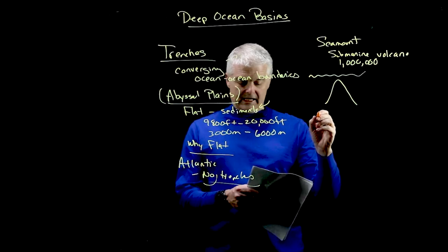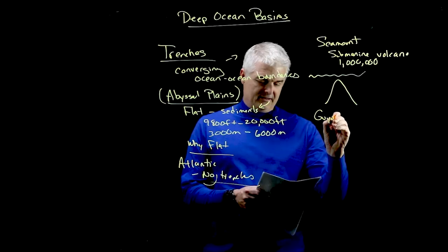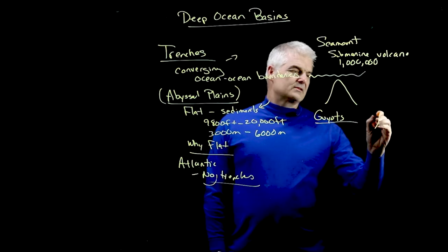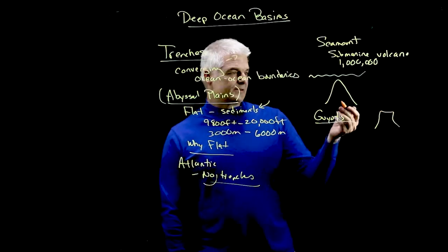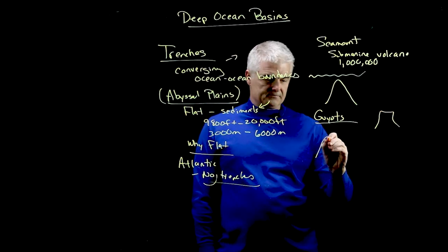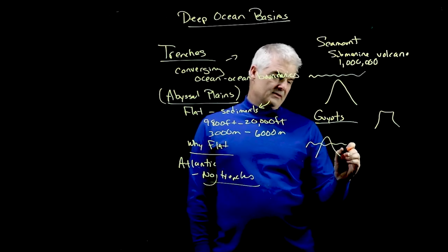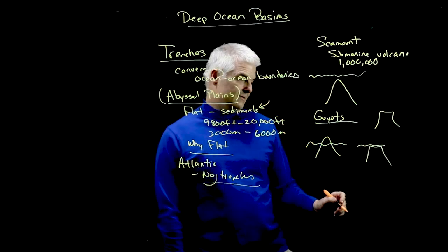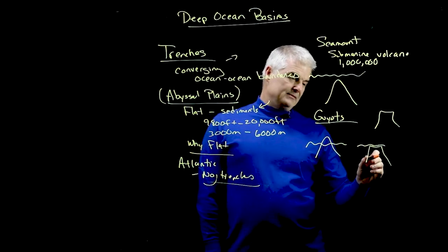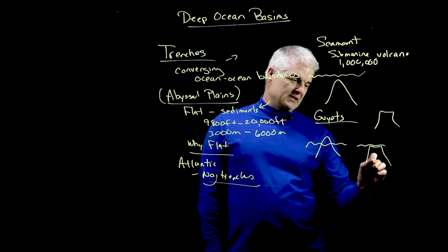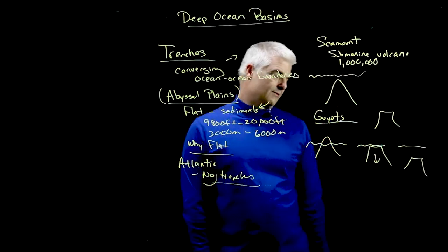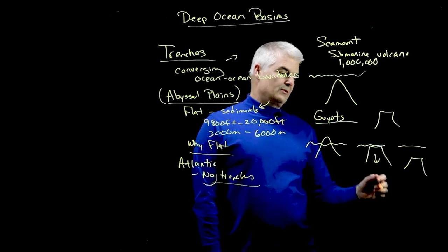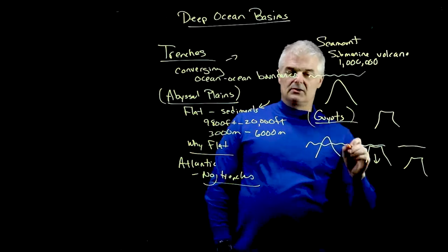The next one's called a guyout. Like a sideout in volleyball? A guyout looks like this. You know what it is? It's a seamount that made it to the surface. And then the wave action flattened this. Now it's a flat top. Sometimes they'll even sink a little bit more. At one point he was above the water and then he sunk. So this is a guyout. We see these all over the place.